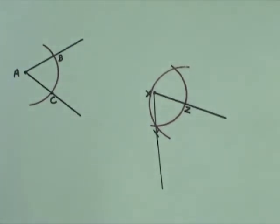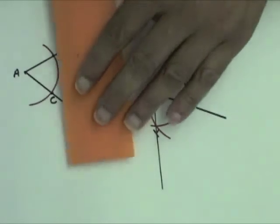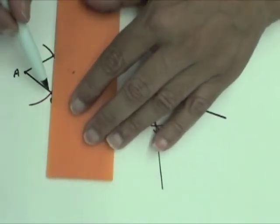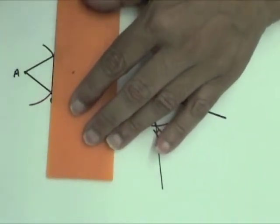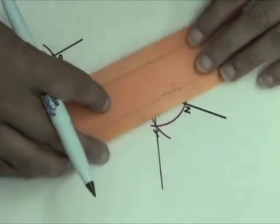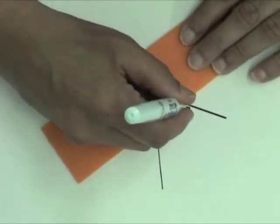We can use congruent triangles to explain why we know that angle X is congruent to angle A. Draw BC to form triangle ABC and YZ to form triangle XYZ.